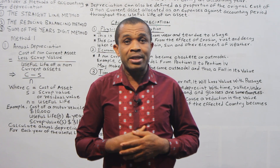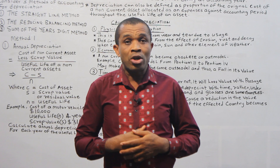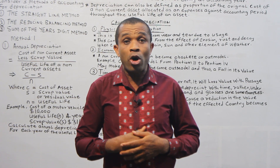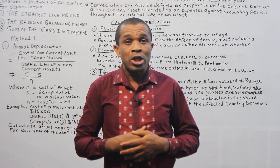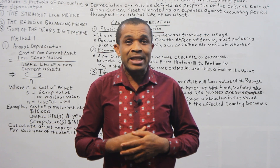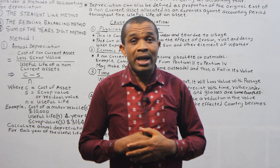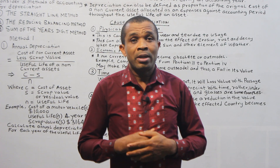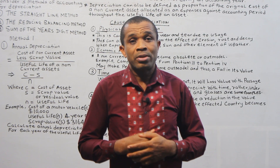In order to have a better understanding of the definition of depreciation, we begin by explaining what non-current assets are. Non-current assets are properties or assets of a business. These properties are purchased not for sale, but for use in the business for the generation of wealth. Examples of non-current assets are land and buildings, plant and machinery, furniture and fittings, motor vehicles, equipment, and so on.